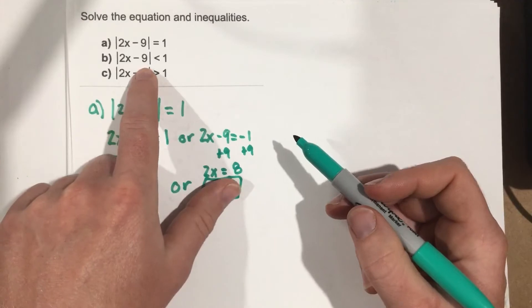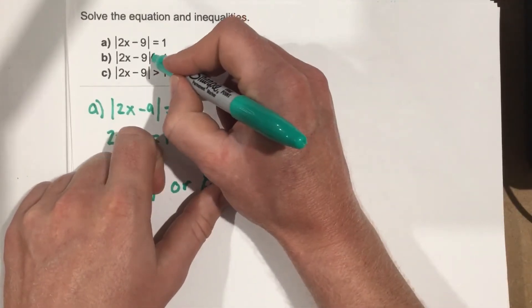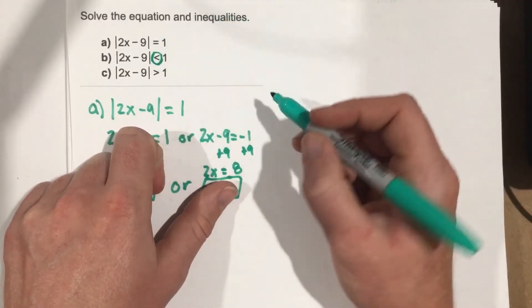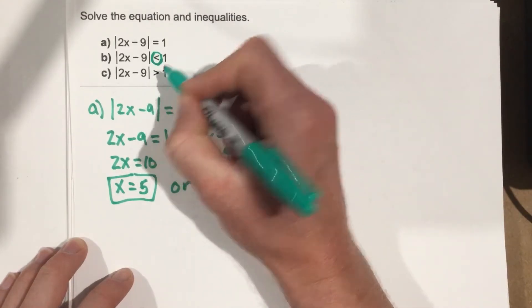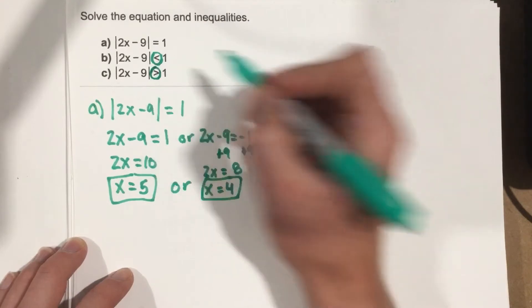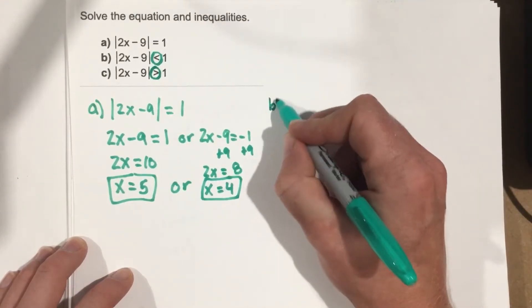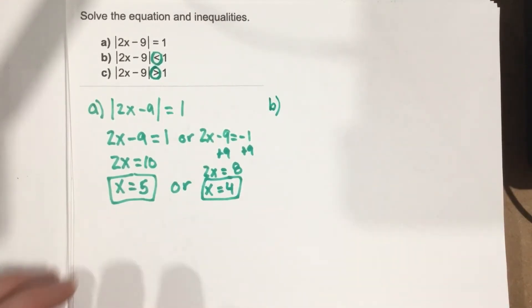Now for part B, you see we have an inequality and you see it's less than 1. And then for part C, you have a greater than 1. These two inequality signs matter because we can set up these inequalities in two different ways. Both are going to be compound inequalities. But one's going to be like an and inequality and the other one's going to be like an or inequality.